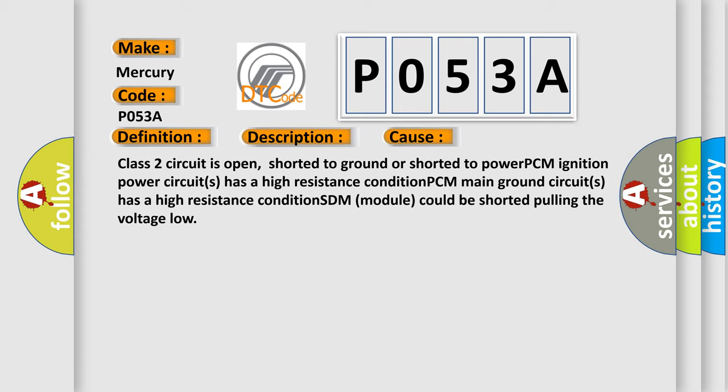Class 2 circuit is open, shorted to ground or shorted to power. PCM ignition power circuits has a high resistance condition. PCM main ground circuits has a high resistance condition. STM module could be shorted pulling the voltage low.